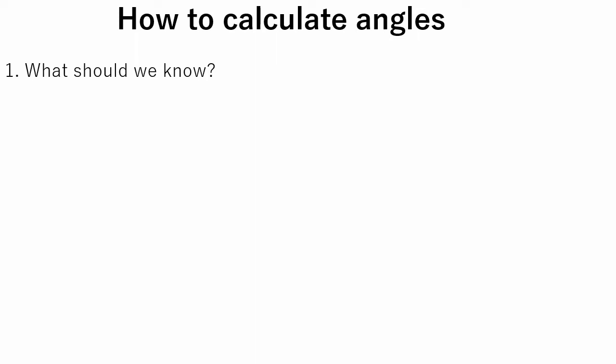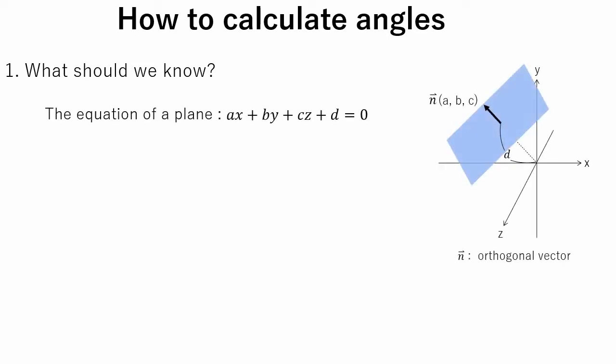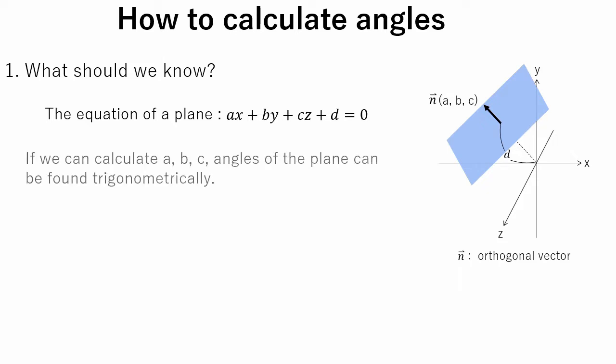What should we know to calculate angles of an object? Let's assume that our object is thin, like a book or a TV monitor, and can be approximated as a plane. In this case, we need to find the angles of the plane. The equation of the plane is expressed as shown. Here, A, B, and C are elements of the plane normal vector. If we can calculate these elements, the angles can be found trigonometrically.